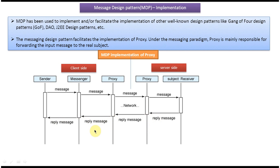The important thing here is this proxy. The main responsibility of this proxy is just to forward the message it is getting from the sender to the real subject, which is the receiver. If you see from the other direction, the receiver will send the reply message to the server side proxy, and from there the real subject is the sender, so the reply message has to be sent back to the sender. This is how, using this message design pattern, we can implement the proxy design pattern.